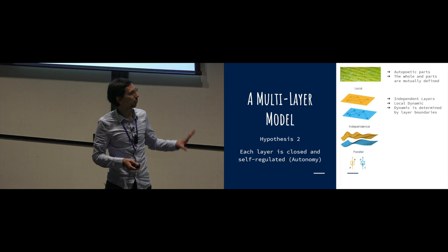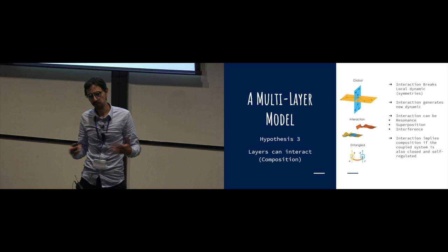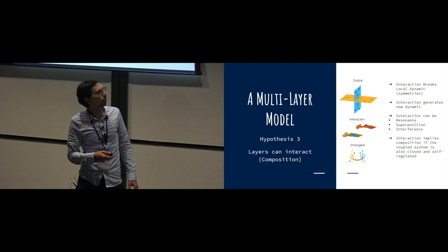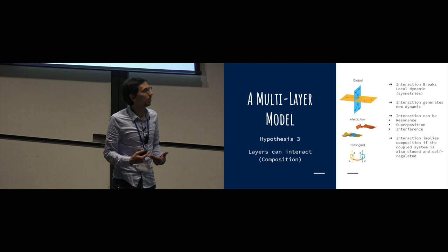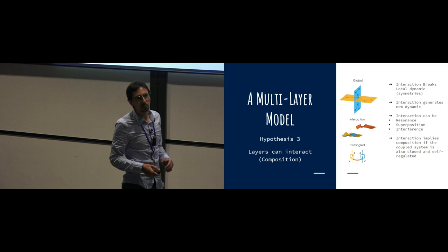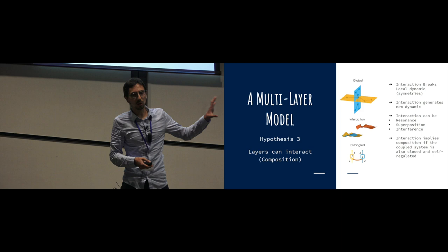Then you have the third hypothesis, which is that these layers can interact. When they interact, you break the local dynamic, you generate new dynamics, global ones, you generate new symmetries, you can define different interactions, and you can also define rules of compositions if these coupled systems are also closed and self-regulated.